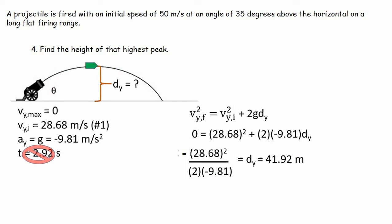We get a displacement in the y direction of 41.92 meters high. So that's how high off the ground the projectile reaches, neglecting any height the cannon itself was at — we'll assume it's essentially at ground level.